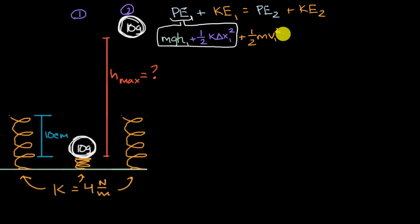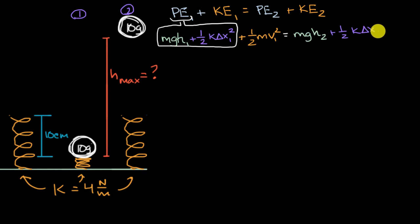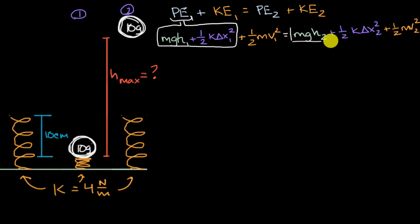That total must equal the sum in scenario two: mass times g times height two, plus one half times the spring constant times compression in scenario two squared, plus one half times mass times velocity in scenario two squared. This is our potential energy in scenario two, and the last term is our kinetic energy.